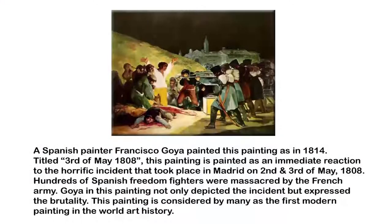What was it that he painted, and what is this painting all about? This painting is an immediate reaction to the horrific incident that took place on 2nd and 3rd of May 1808, when hundreds of Spanish freedom fighters were brutally massacred by the French army. Goya is not depicting the incident the way a history painter would — he is evoking certain emotions, expressing his anguish, his anger, his panic, his hopelessness, sympathizing with the victims.